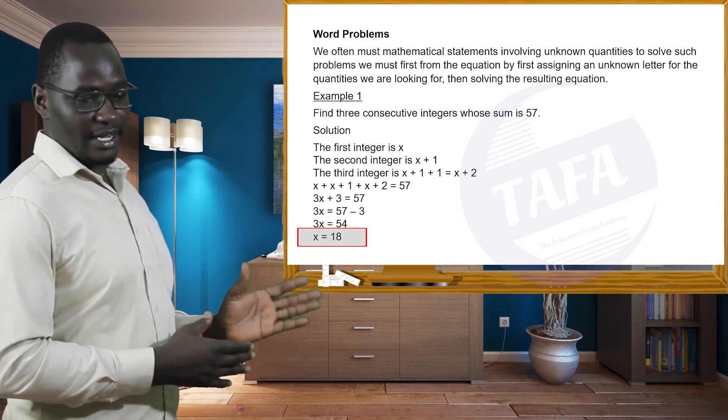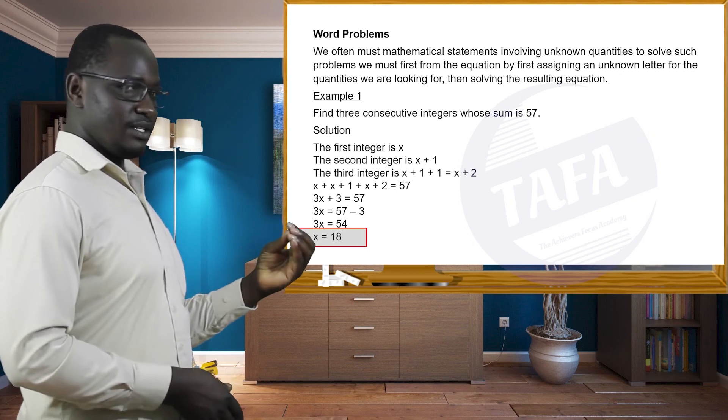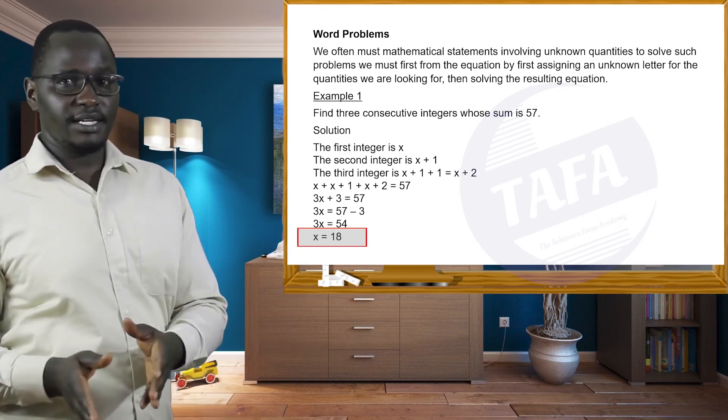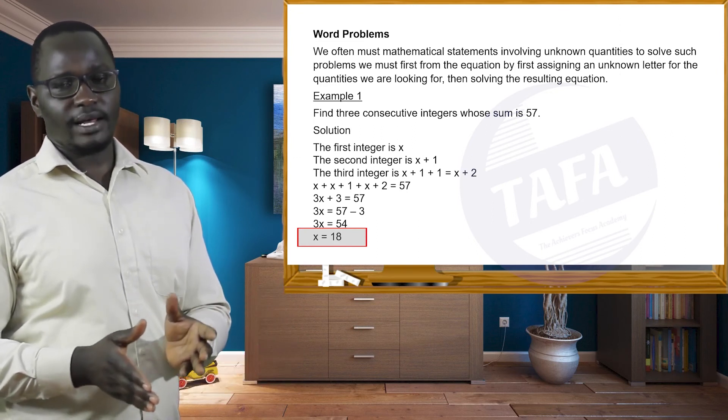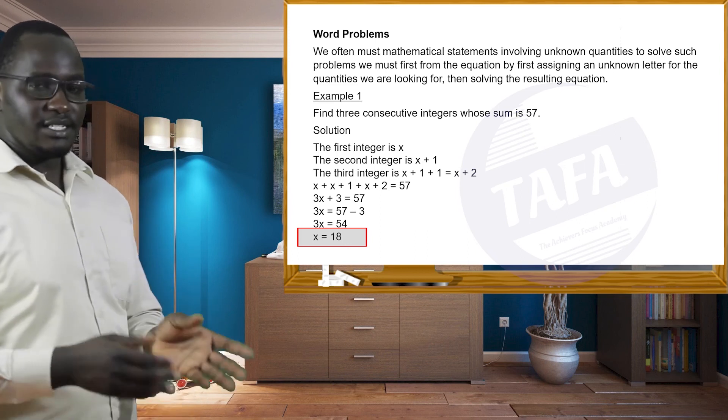But the question was find three consecutive integers. It means the first one which is x is 18, the next one 19, and the other one will be x plus 2, and that is going to be 20. So the numbers are 18, 19, and 20.